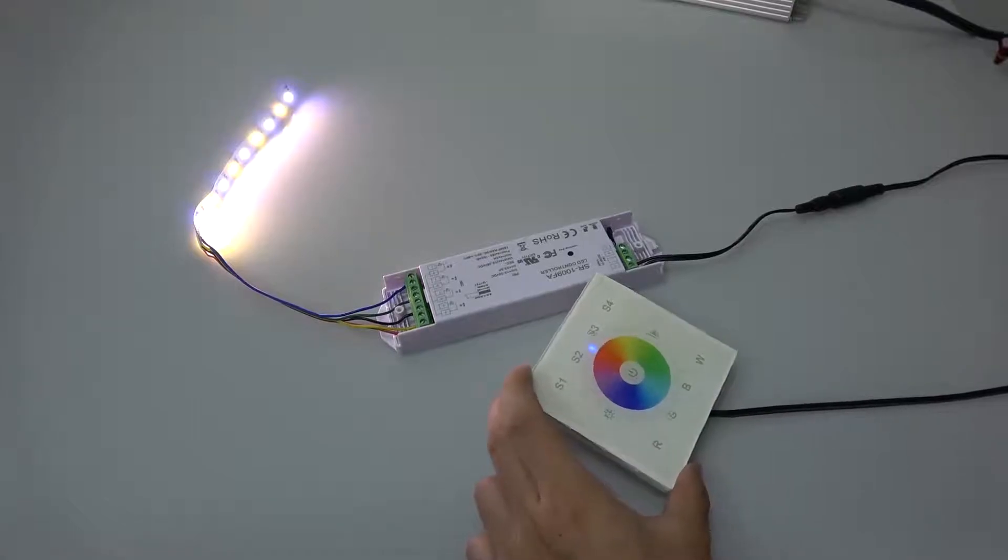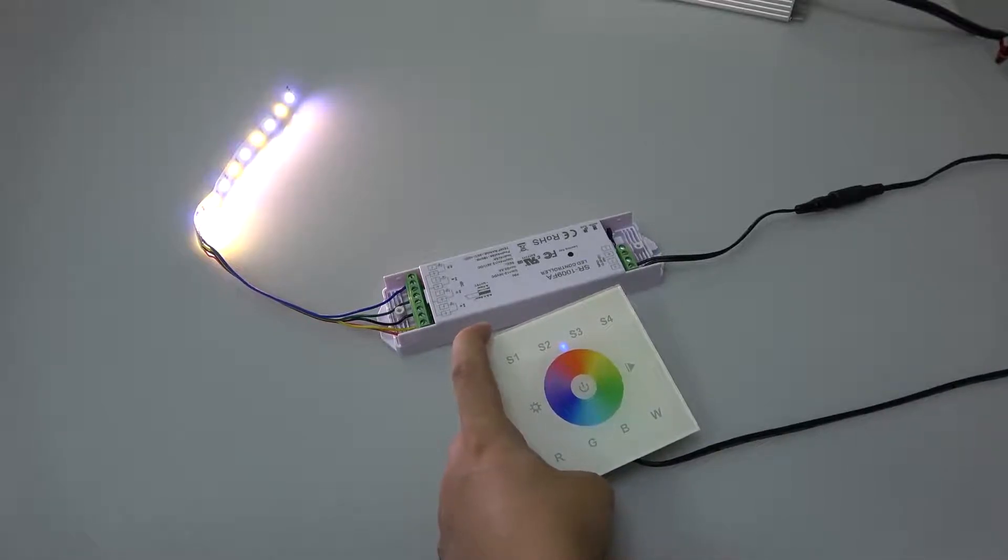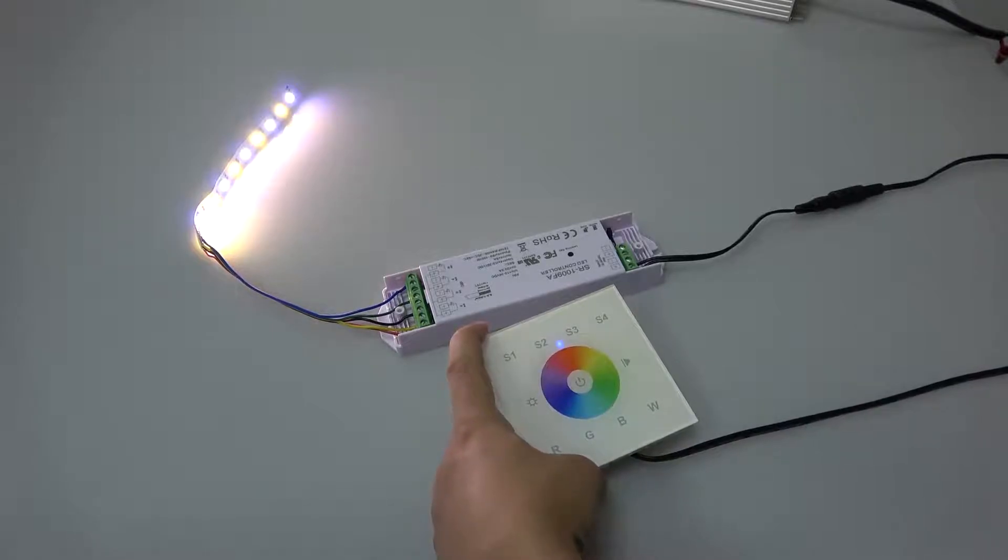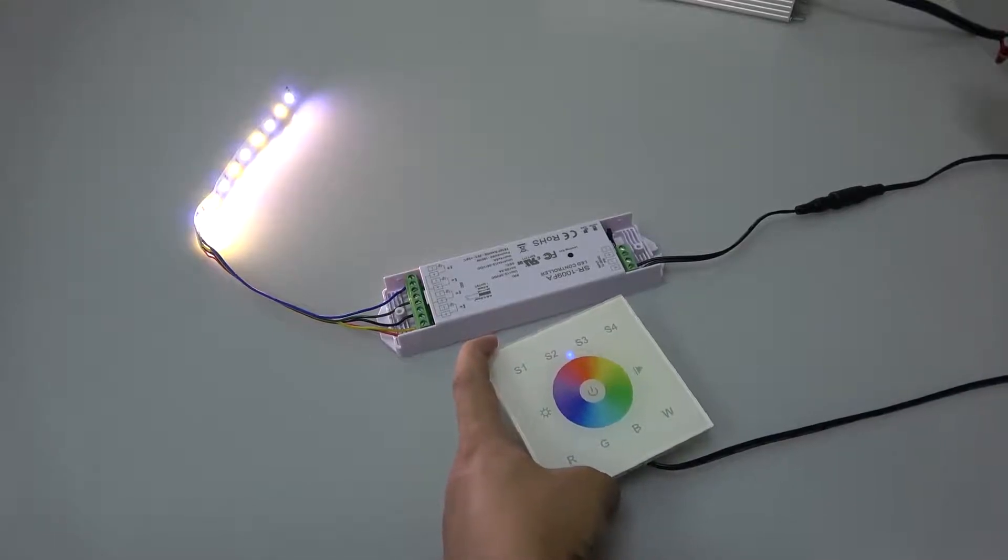We're going to introduce how to pair the wall touch panel SR2820B to the RF receiver 1009FA. It's quite easy, first by using the learning key on the receiver.